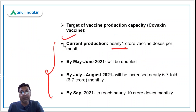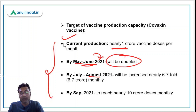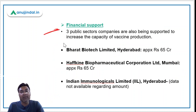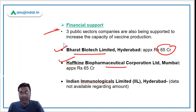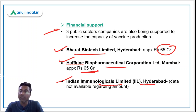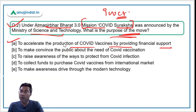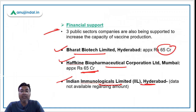The Department of Biotechnology is providing financial support as grants to pharmaceutical companies. Current production is nearly 1 crore vaccine doses per month. The targets are: double production by May-June 2021; increase by 6-7 times by July-August 2021; and increase by 10 times (approximately 10 crore monthly doses) by September 2021. Financial support is being provided to Bharat Biotech Limited (~65 crores), Haffkine Biopharma Corporation Limited Mumbai (~65 crores), and Indian Immunologicals Limited, Hyderabad. The purpose of the move is to accelerate COVID vaccine production, so option A is the correct answer.